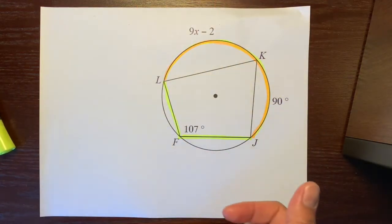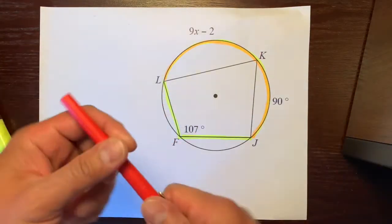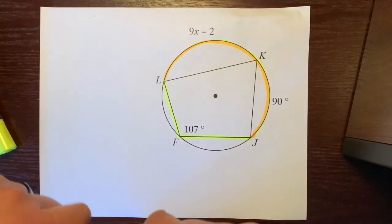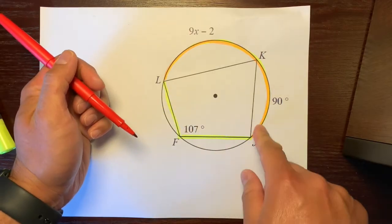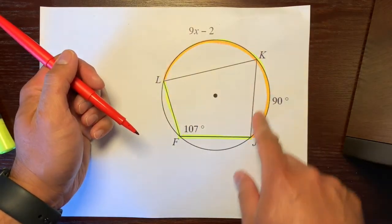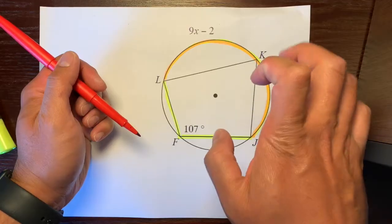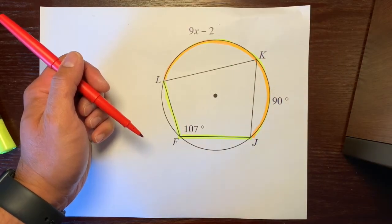And if you guys remember, if you don't then I'm going to tell you. The inscribed angle is half the measure of its intercepted arc, or its intercepted arc is twice the measure of the inscribed angle.